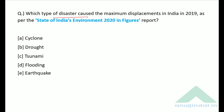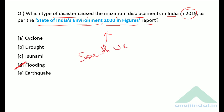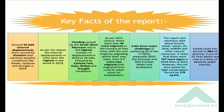Which type of disaster caused the maximum displacement in India in 2019 as per the State of India's Environment 2020 report? According to this report, flooding caused by the southwest monsoon led to the maximum displacement in India in 2019. The correct answer is option D — flooding.